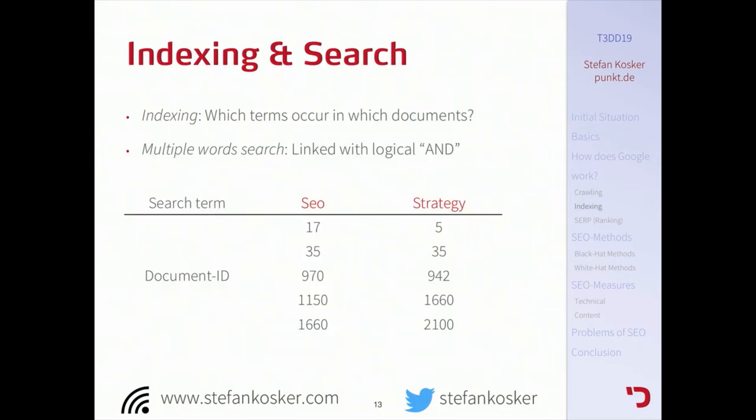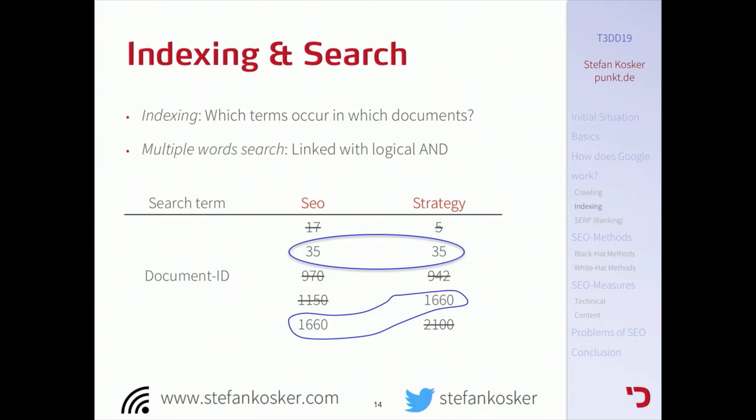The next thing Google does is indexing. Indexing is nothing else than Google looking at which search term is on which pages. For example, if we search for 'SEO strategy,' Google links both tables with a logical AND and searches, finding that the word SEO is on page 17 but there's no 'strategy' there, while pages 35 and 1660 have both SEO and strategy next to each other — making both good candidates for the result.